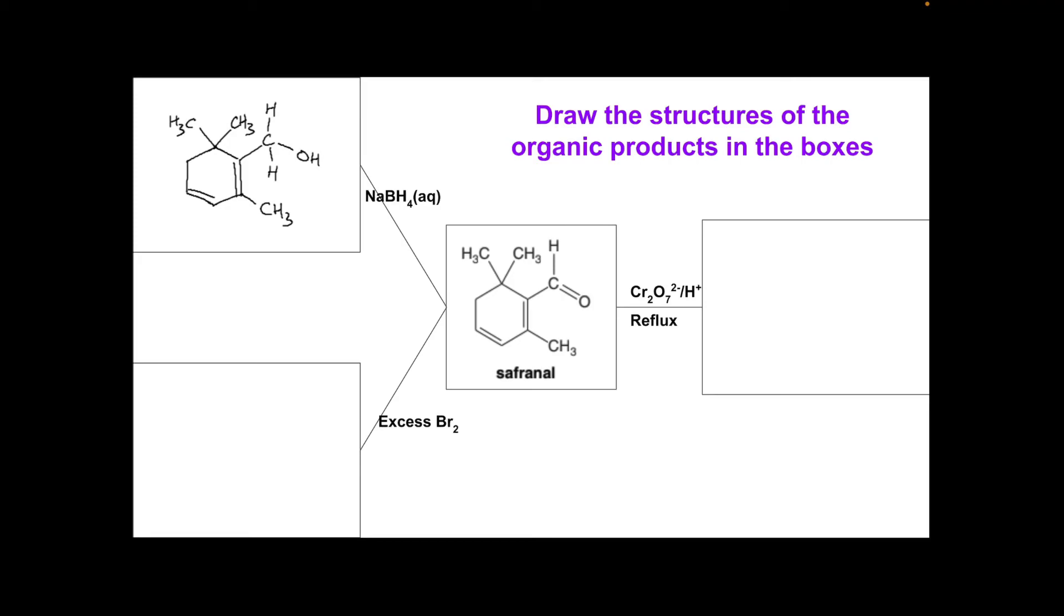If you reflux it with acidified dichromate 6 ions, that's an oxidising agent, so it's going to oxidise the aldehyde group now to a carboxylic acid group, so you're going to get that.